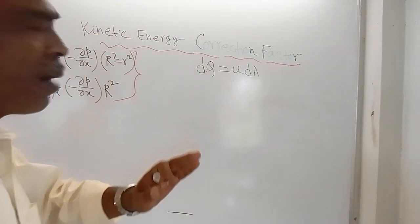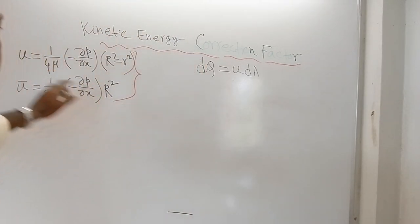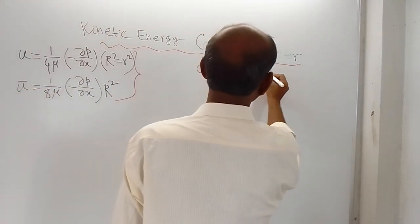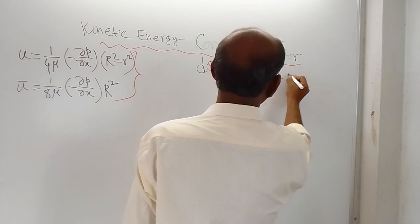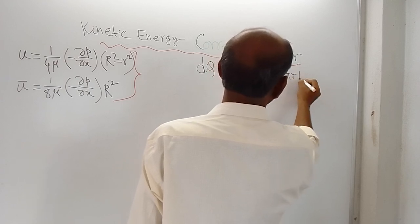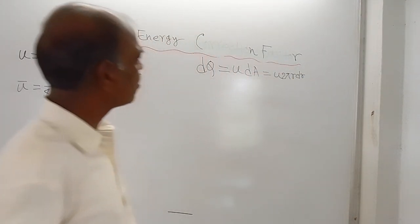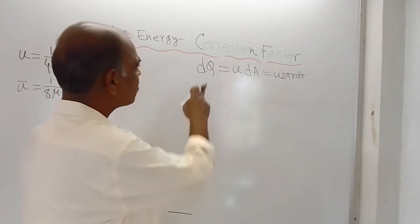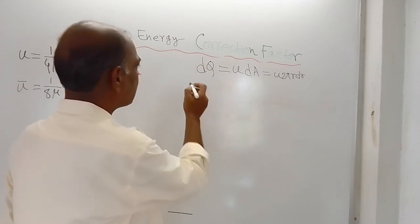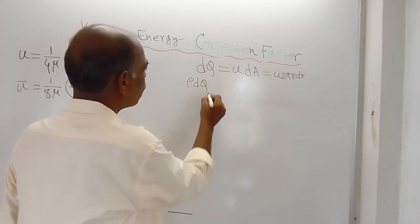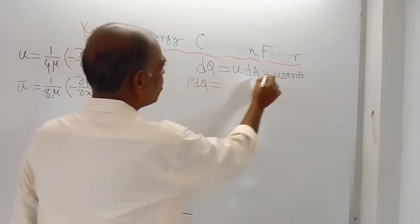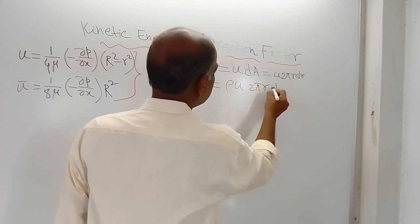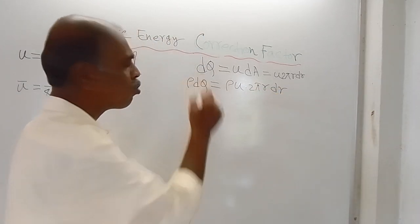The actual velocity u can be written using the known formula, and dA = 2πr·dr. So dq equals u·2πr·dr. The mass flow rate (mass per unit time) is therefore ρ·dq = ρ·u·2πr·dr.